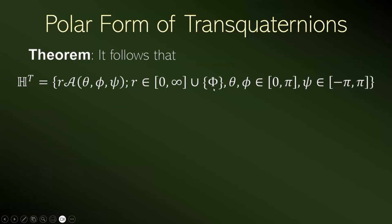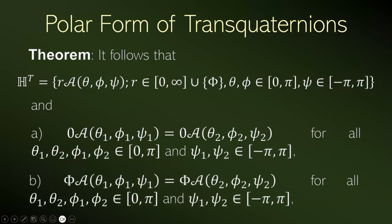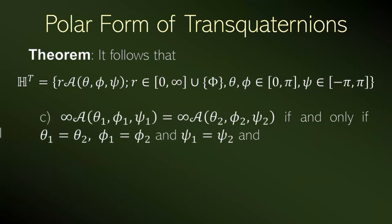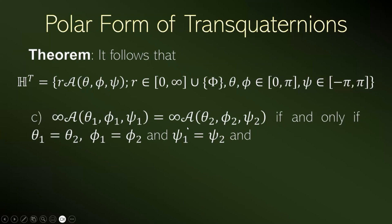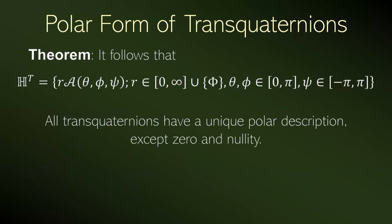There is only one transquaternion number with radius zero and only one transquaternion number with radius nullity. But if at least one angle differs, we have two different infinite transquaternion numbers — that is, transquaternion numbers with radius infinity. And in a similar way, if at least one angle differs, we have two different transquaternions. All transquaternions have a unique polar description, except zero and nullity, because zero and nullity can be represented in polar form with any angle.